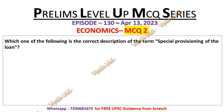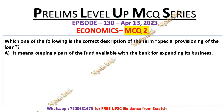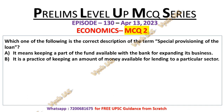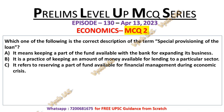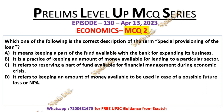MCQ number 2 is about the term 'special provisioning of loan.' Statement A: It means keeping a part of funds available with the bank for expanding its business. Statement B: It is a practice of keeping an amount of money available for lending to a particular sector. Statement C: It refers to reserving a part of funds available for financial management during economic crisis. Statement D: It refers to keeping an amount of money available to be used in case of a possible future loss or NPA. Try to answer this question and write it in the comment section.